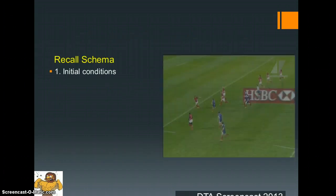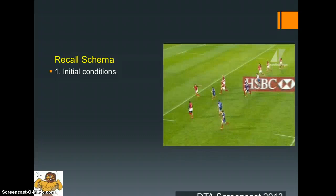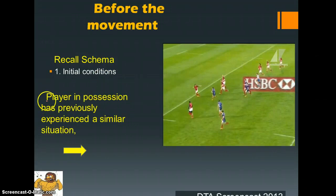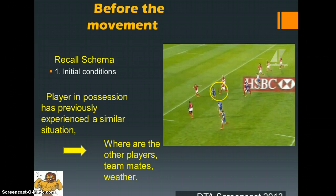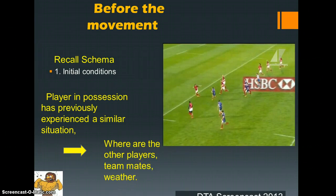The recall schema is prior to the motor skill actually being produced, and we're looking at the initial conditions. This player in possession needs to identify: has he previously experienced this before, or has he been in a similar situation? Running towards an opposing player with defenders at a particular distance away — if he's been in a similar situation, he can draw down that schema from his long-term memory and hopefully produce an effective motor program. Other factors such as weather may also be taken into consideration.